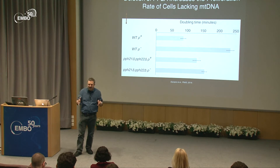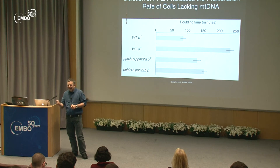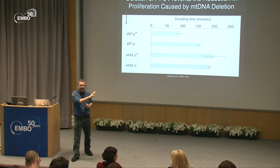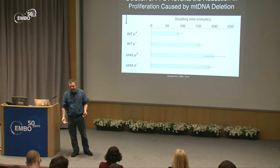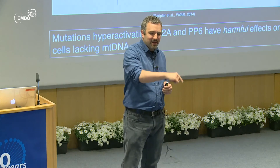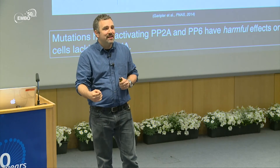Taking this out of the sensitized background and studying proliferation rates directly, wild-type rho-minus cells are severely affected after mitochondrial DNA loss. Deleting protein phosphatase 2A reduces this severity. For the Sit4 mutant, which is already sick, deleting it eliminates the difference in proliferation between cells with and without mitochondrial DNA, again suggesting a beneficial effect of PP6 deletion. Conversely, mutations that hyperactivate these phosphatases are harmful for cells lacking mitochondrial DNA.